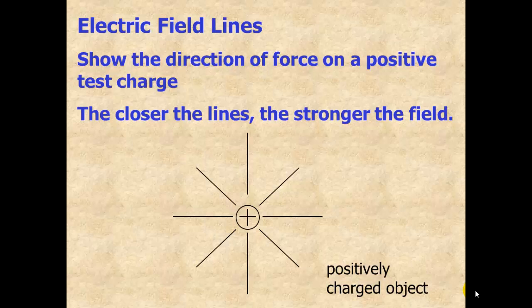Because we can't see these fields, we use field lines to illustrate them. Field lines show the direction of force on a positive test charge. The closer the lines, the stronger the field.